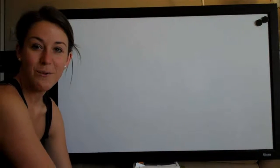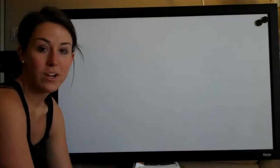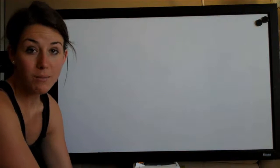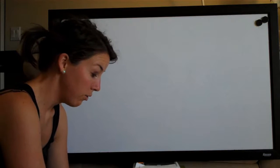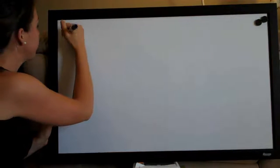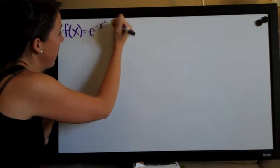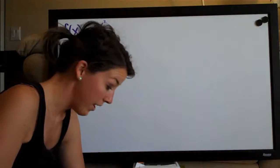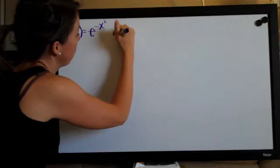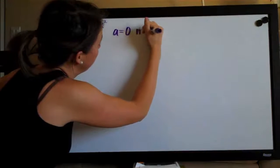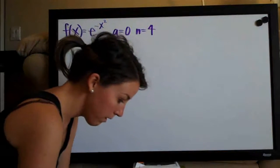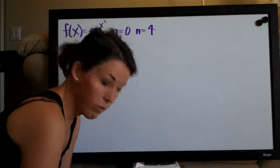Hi everyone! Welcome back to integralcalc.com. We're going to be doing another Taylor polynomial problem today. This one asks us to compute the nth degree Taylor polynomial of f of x equals e to the negative x squared, computed about a when a equals zero and n equals four, and then simplify the coefficients as much as possible.